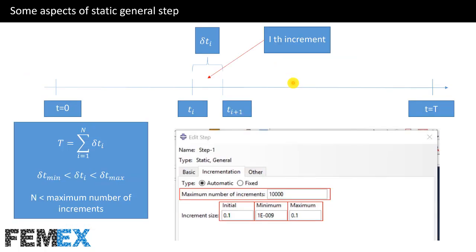Now, I want to talk about some main settings of increments of static general steps. The solver will choose the time increment size according to this equation. This is minimum delta t and this is maximum delta t.